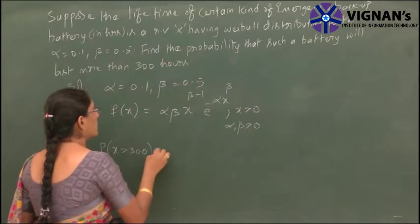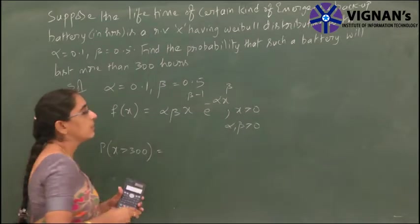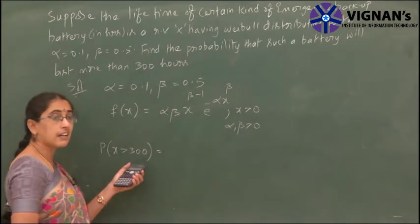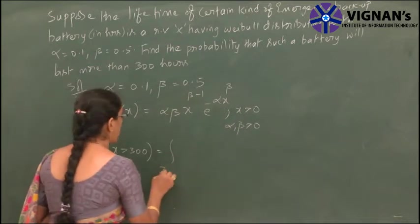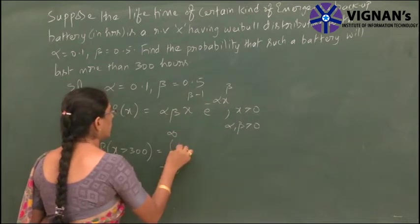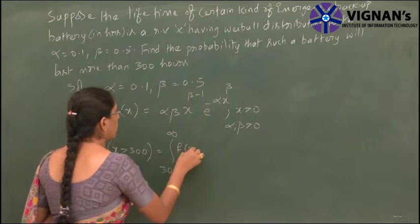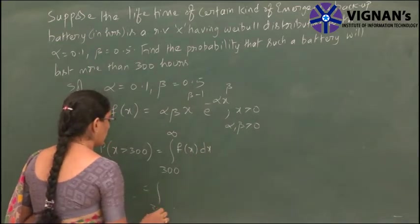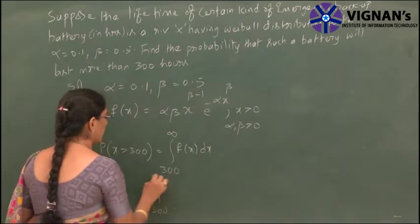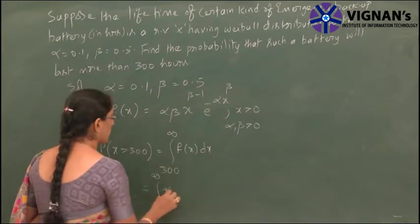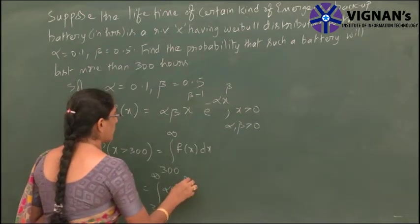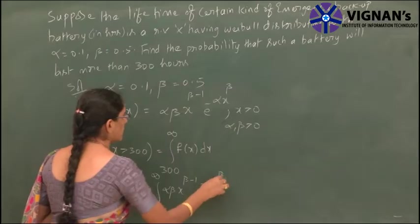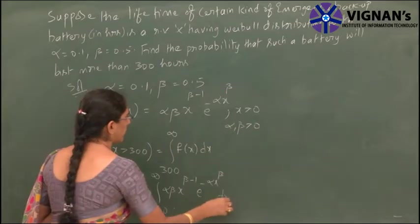The Weibull distribution lies between 0 to infinity. So X greater than 300 means we have to find the integral from 300 to infinity of f(x) dx, which equals the integral from 300 to infinity of alpha·beta·x^(beta-1)·e^(-alpha·x^beta) dx.